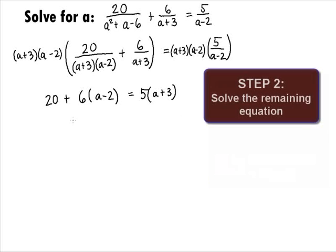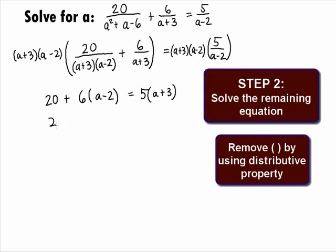In Step 2, we want to solve the remaining equation. We can remove the parentheses by using the distributive property. So, on the left side, we will get 20 plus 6 times a minus 2 is 6a minus 12 equals and distributing that 5, we get 5a plus 15.